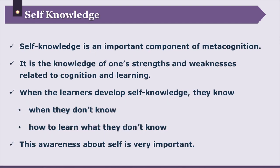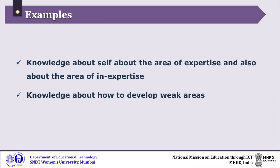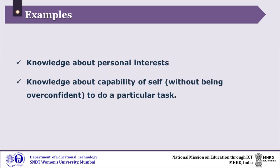Now let us understand self-knowledge. Self-knowledge is an important component of metacognition — it is the knowledge of one's strengths and weaknesses related to cognition and learning. When learners develop self-knowledge, they know when they don't know something and how to learn what they don't know. This awareness about self is extremely important. Examples include knowledge about one's area of expertise and inexpertise, knowledge about how to develop weak areas, knowledge about personal interests, and knowledge about one's capability without being overconfident for a particular task. With this, we have come to the end of learning about the knowledge dimension of Revised Bloom's Taxonomy.